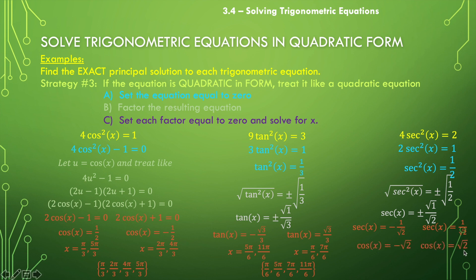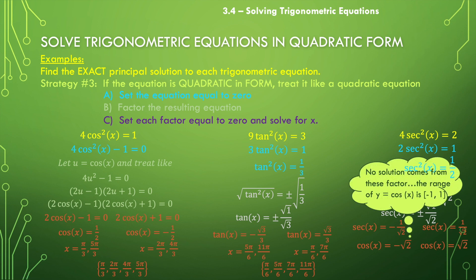We know that the range of cosine only goes from -1 to +1. The square root of two is approximately 1.4, which is outside that range. That means there is nothing that satisfies either equation because of the limitations of the range of the cosine function. For this particular equation, there is no solution.